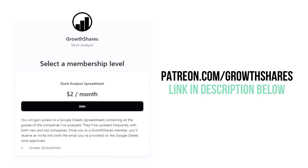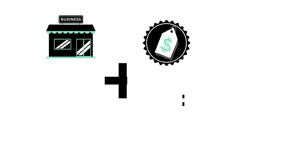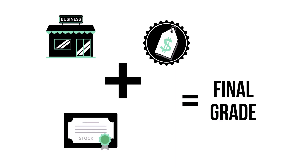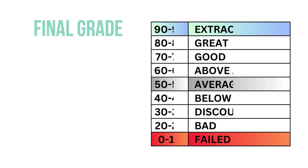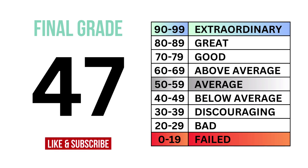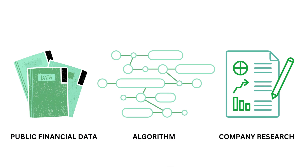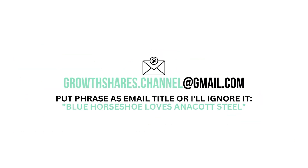Before we calculate our final grade, consider becoming a Growth Shares Patreon member and get access to my spreadsheet with every grade from every company I've analyzed — it's updated all the time. Head to patreon.com/growthshares or click the link in the description. By combining the business, the stock, and the price, we can get the overall outlook of the company, which gives us this final grade and its type of investment. This analysis uses public financial data, research, and a proprietary algorithm to come up with this company's grades. Invest wisely and, as always, take care of your money.